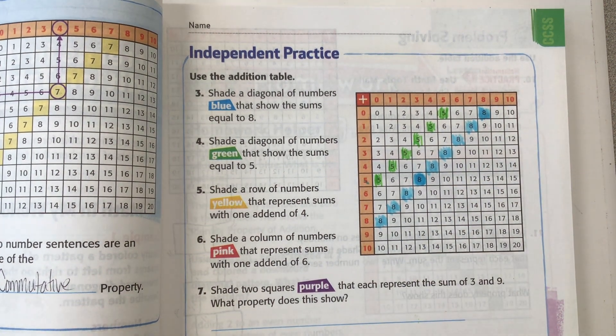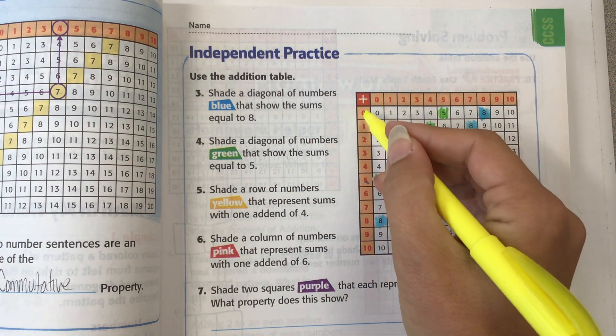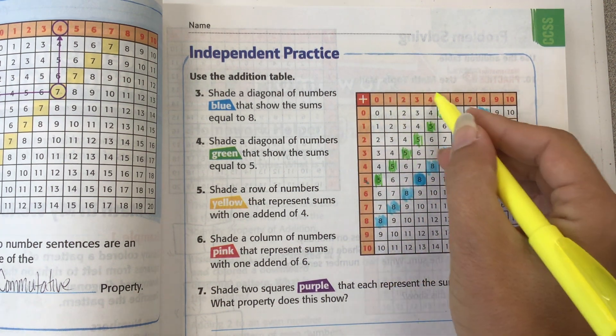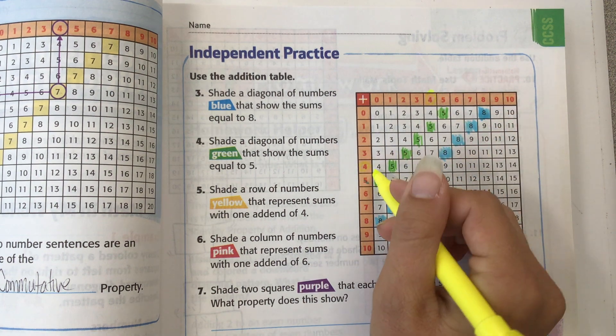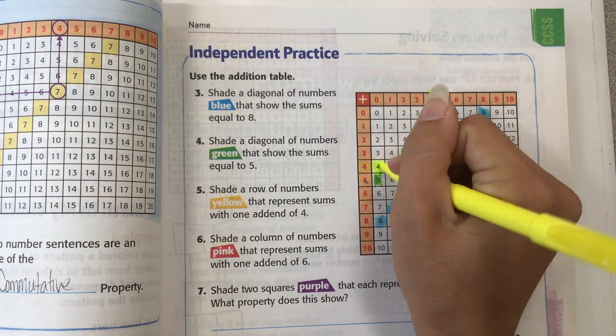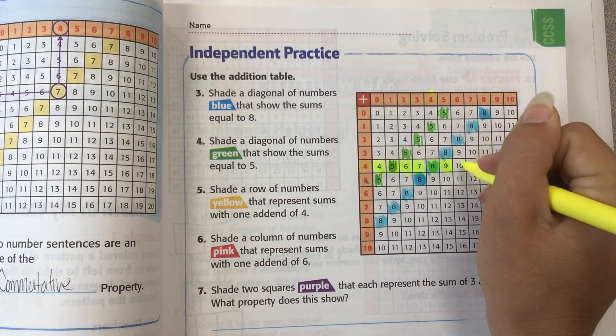Shade a row of numbers yellow that represents sums with one addend of four. So one addend means either one of the numbers over here is four or one of the numbers over here, because remember the addends are these numbers here. So we can shade the row this way. Look, some of these numbers I've already shaded. There are also addends of four.